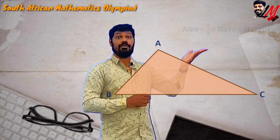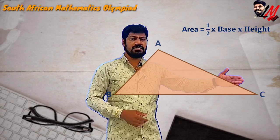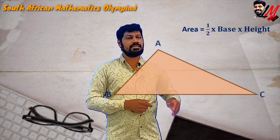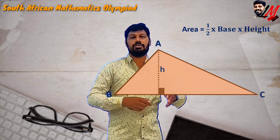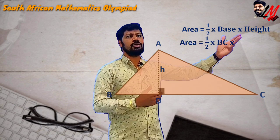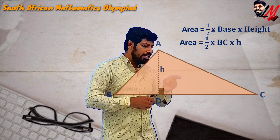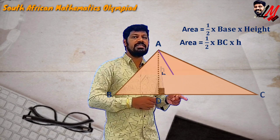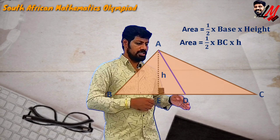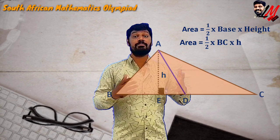Take a triangle ABC. We know how to calculate the area of a triangle: half into base into height. We consider BC as the base, and if you draw any altitude, that will be the height. So half into H into BC gives the area. Now, suppose from vertex A to the midpoint of BC you draw a line — let us call that point D. AD is considered a median.